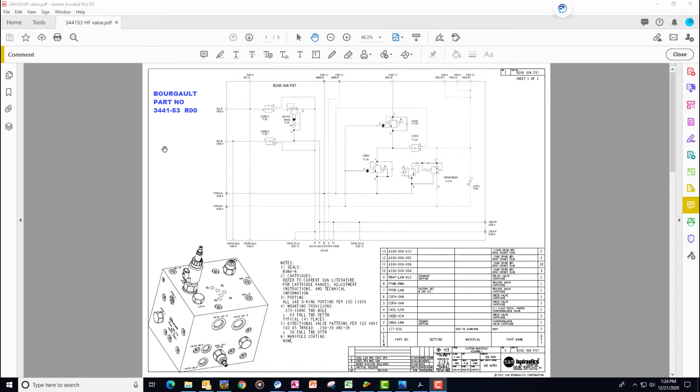So let's review what we've learned so far. We're going to look at the 3441-53 high float block. The inner wing down pressure circuit for the high float and standard valves is virtually identical. So all of our drills up to and not including the 86 foot drill have inner wing down pressure.